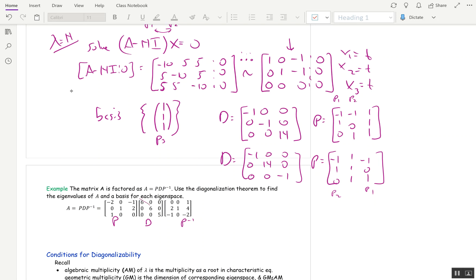So D is the diagonal matrix in the middle, and the eigenvalues are listed on the diagonal. So for lambda equals 6, a basis for the eigenspace is these two columns: negative 2, 0, 1, and 0, 1, 0.